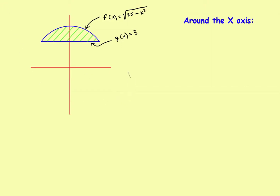This will be part 2 of Volumes of Revolution using the method of washers. If you haven't done it yet, I definitely would watch part 1 because it shows where the formulas came from, and it has an example where you knew the endpoints of the interval when you found the volume of revolution. Now we'll look at a second example where you do not know the endpoints to the interval and you have to calculate them first.